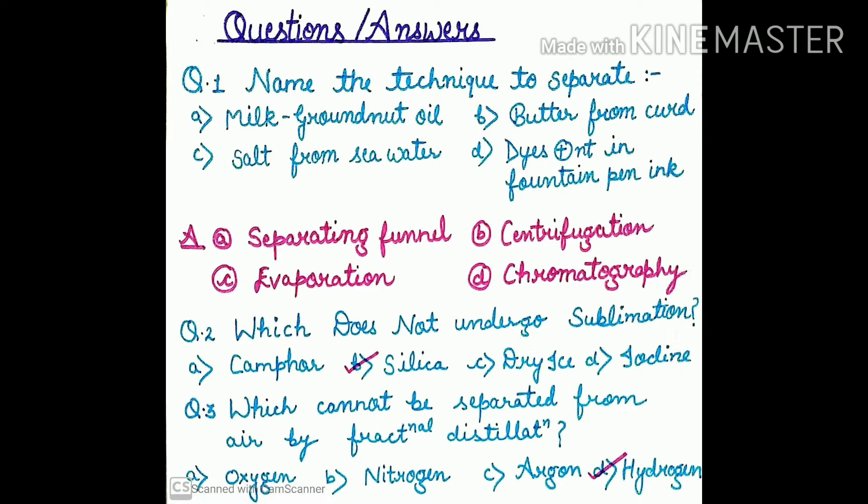Camphor (kapoor) participates in the sublimation process. Silica does not participate in it. Dry ice means solid carbon dioxide — this also participates in sublimation. Iodine also participates in the sublimation process. So the first, third, and fourth options participate in sublimation and convert into gaseous form. Therefore, the correct answer is silica.